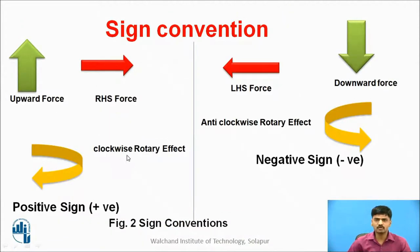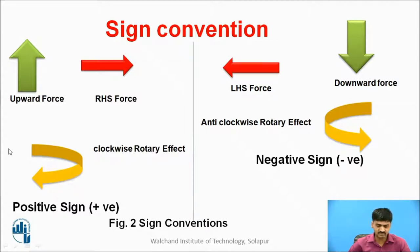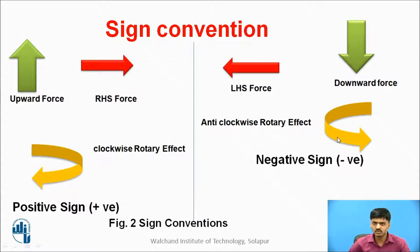Whenever we solve problems on support reactions, you must know the sign conventions. Upward force: positive sign. Right-hand side forces: positive. Clockwise rotary effect: positive sign. Similarly, left-hand side forces: negative sign. Downward forces: negative sign. Anti-clockwise rotary effect: negative sign.